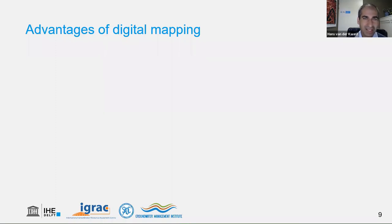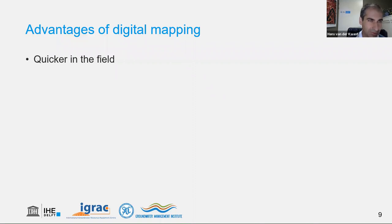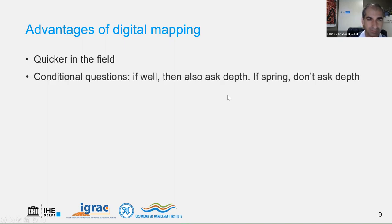We are now in the age where things are going more digital, and there are some advantages of digital mapping. It's quicker in the field — you don't have to write down all the answers in a field book. You can simply use an app and tap the right answers in a prepared field form designed to be efficient. You can also have conditional questions: in a digital format, if it's a well, ask the depth; if it's a spring, hide the depth question or don't allow it to be filled in.